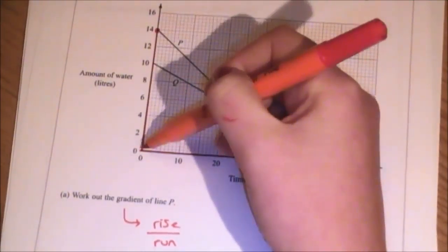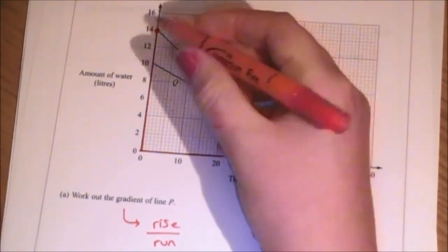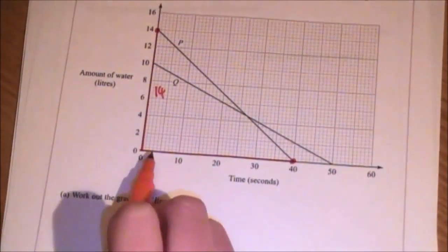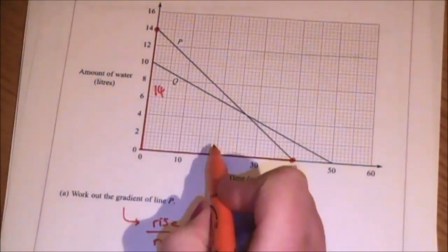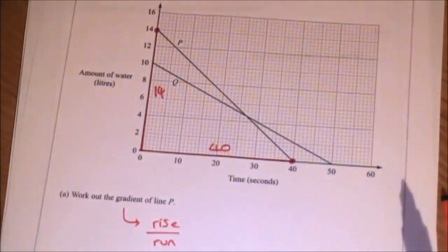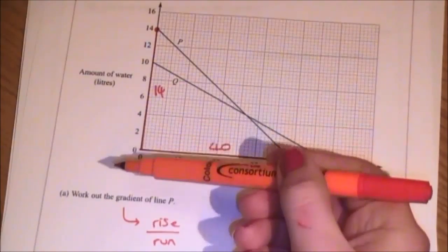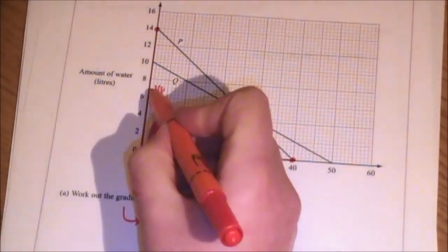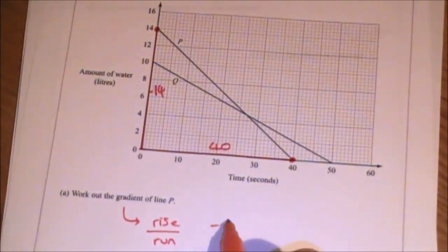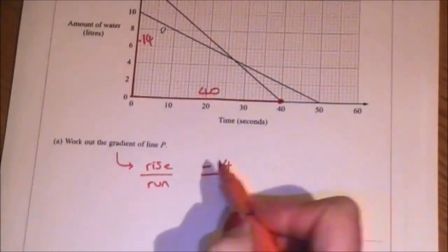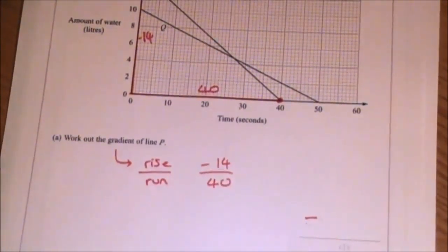This has got a rise from 0 to 14, so it's got a rise of 14 and it's got a run of 40. Now, the fact that it's not actually a rise, it's a fall down, means that it's negative 14. But as long as you are aware that it's a downhill line, so it would be a negative gradient anyway, it's not such a big deal.